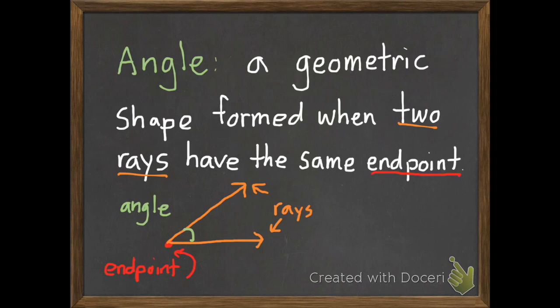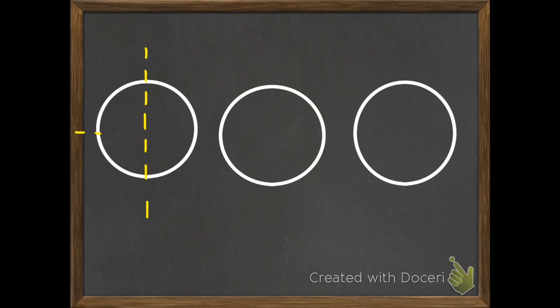To help us with angles I'm going to draw three circles and we can divide these into four parts. If I put an endpoint here in the middle and then draw two rays, if I was to make a turn from one ray to another, how much of a turn would that be? How much of the circle have I gone around? I've gone around one-fourth. So this would be a one-fourth turn.